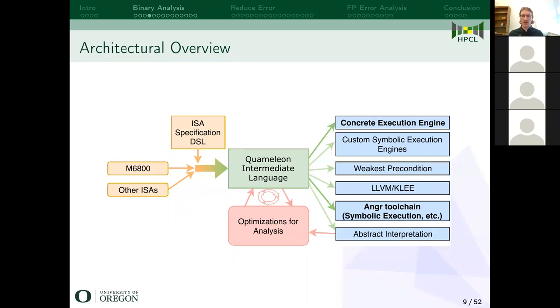I'll start to talk about the architecture of Chameleon, and we'll go through these phases in detail by color, starting with its intermediate language — which I was describing as the adaptable IL.